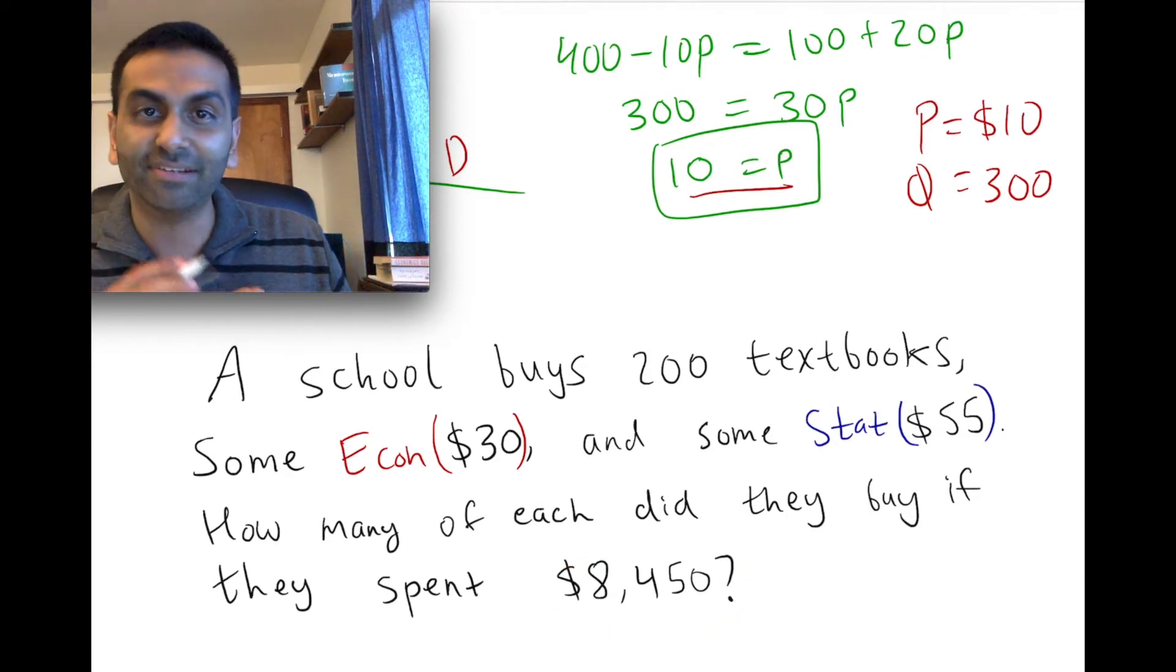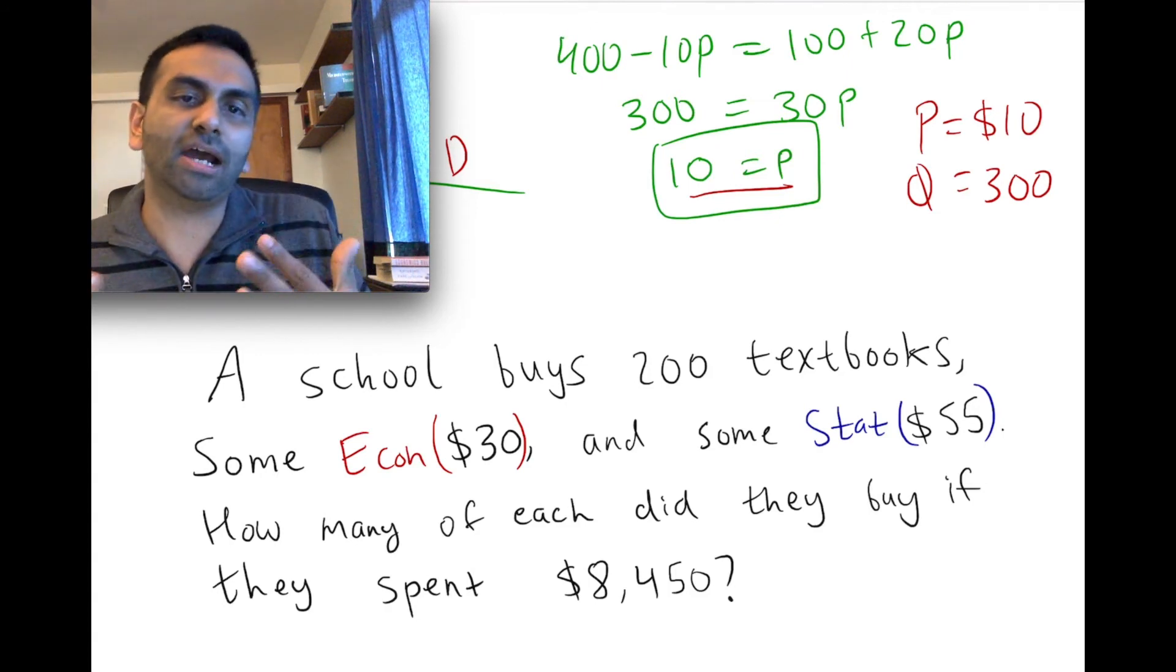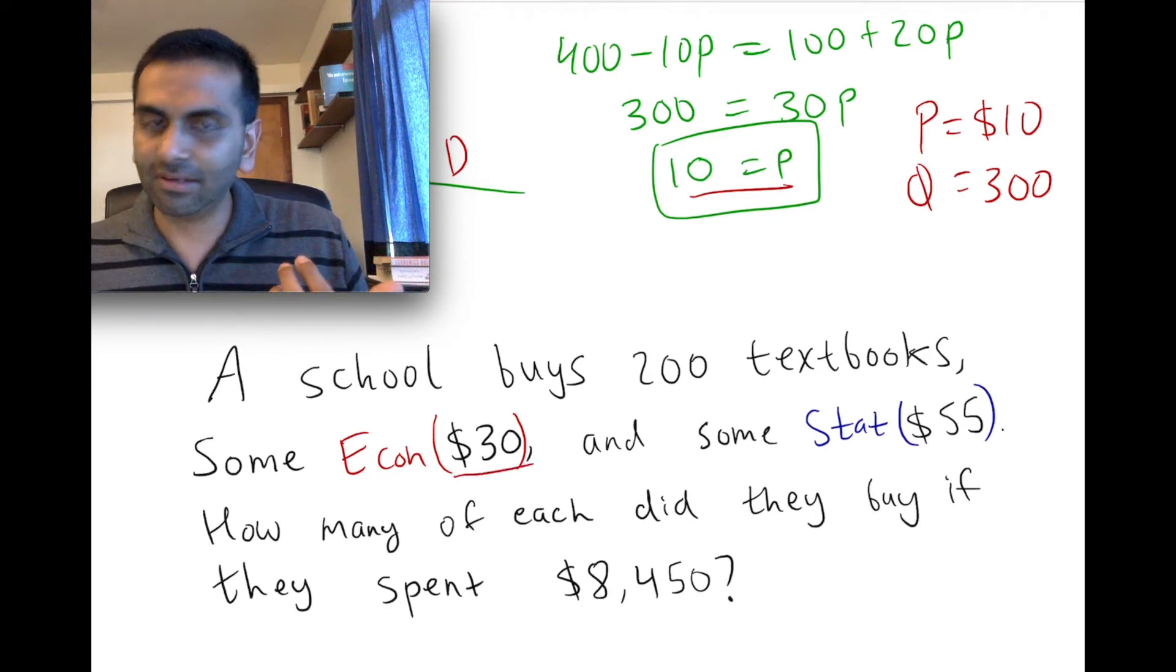Now, if you were to ask this question as like a puzzle to most people in the world, they're going to guess and check. They're going to say, what if it's 100 and 100? They're going to do 100 times this, 100 times this, see how much money they would spend. Because if it's 100 times 30, that's $3,000 that you spend on econ books.